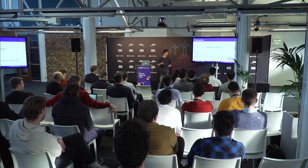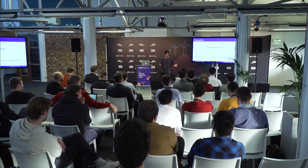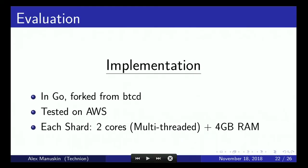Let's see if it works. We implemented it in Go, forking an existing Bitcoin client written in Go, because we wanted to observe actual bottlenecks rather than just run a simulation. We ran it on EC2. In the experiment, each component — each shard and coordinator — is a system with two cores and four gigabytes of RAM. Not too big, but that's exactly what we want.